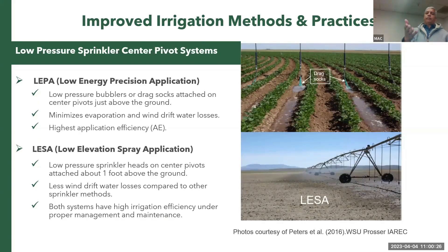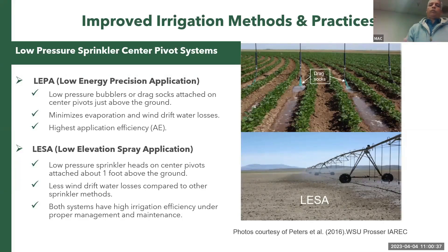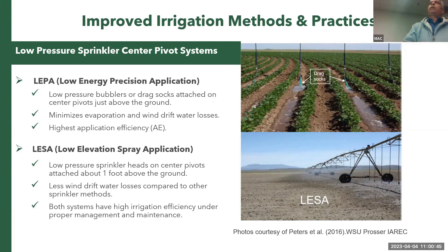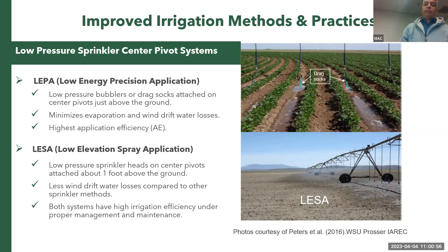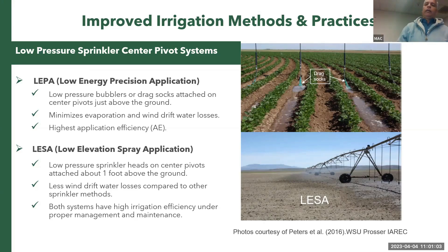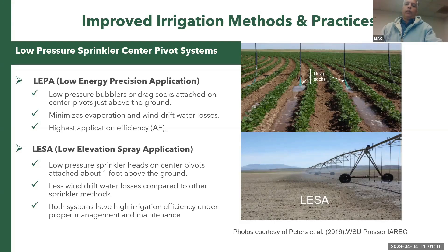Another option is LEPA — Low Energy Precision Application. It has two methods: low-flow bubblers or drag socks, which apply water very close to the soil surface, minimizing evaporation and wind drift with very high application efficiency. LESA — Low Elevation Spraying Application — operates at lower pressure and applies water about one foot from the surface, also reducing wind drift losses.